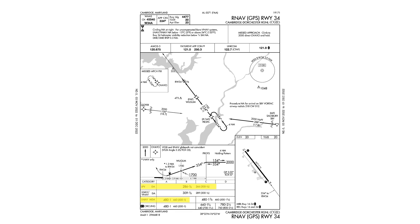So this little paper chase exercise has given us this takeaway: LPV approaches can be thought of and flown as precision approaches, inasmuch as we intercept a glide slope and make a decision at the DA, just like an ILS. When we brief an LPV approach and ask ourselves if we'll fly it like a precision or non-precision, we could prepare to fly it like a precision approach — despite the fact that for planning purposes it's not a precision approach, and we need to use non-precision alternate requirements when creating our flight plans.